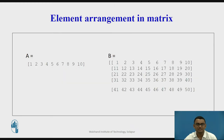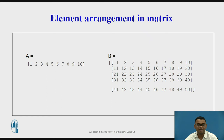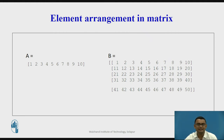This is a basic arrangement of elements in a matrix. On the left side of the slide you see matrix A having one row and ten columns, and on the right you see matrix B having five rows and ten columns respectively.